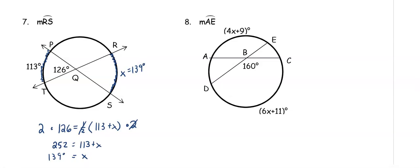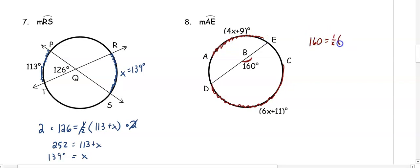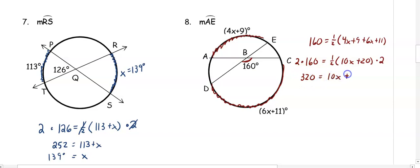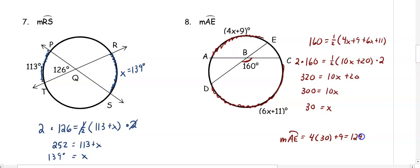In number eight, we want to find the measure of arc AE. The angle of 160 degrees is intercepting arcs CD and AE. So 160 equals one-half of (4X + 9) plus (6X + 11), which simplifies to 160 equals one-half of 10X + 20. Multiplying both sides by 2 gives 320 equals 10X + 20. Subtracting 20, we get 300 equals 10X, so X equals 30. Substituting back, arc AE equals 4(30) + 9, which is 129 degrees.